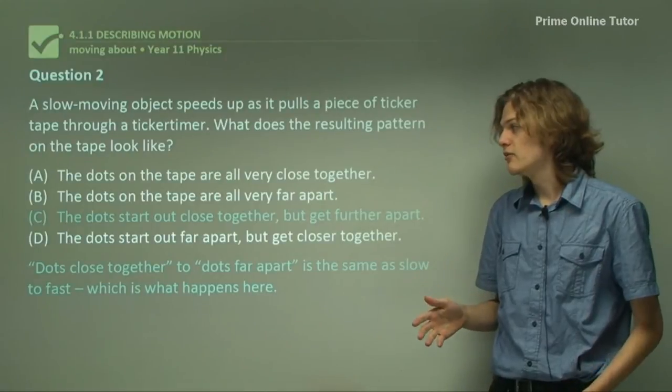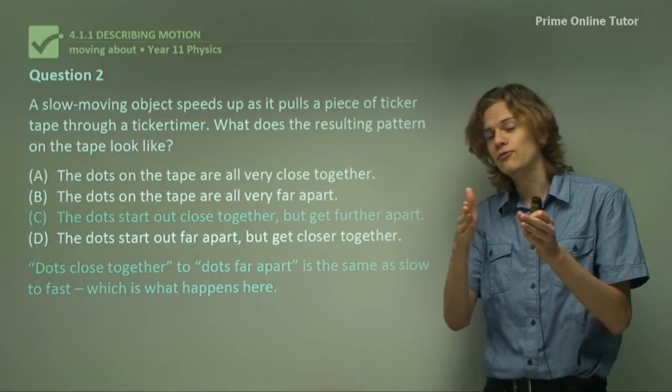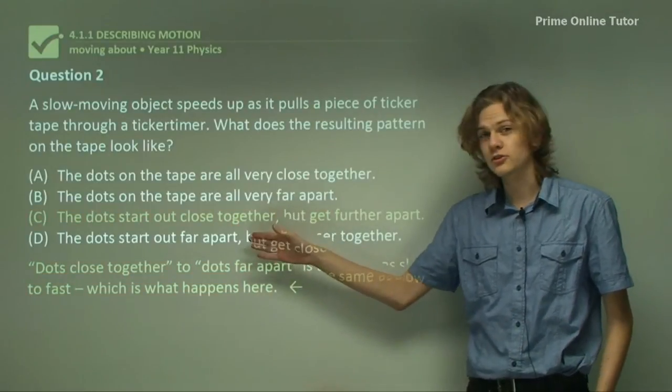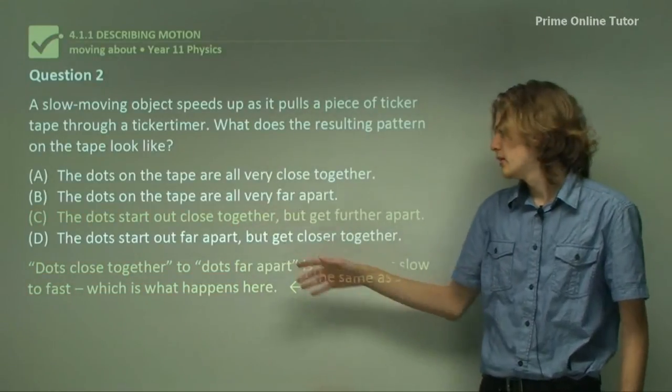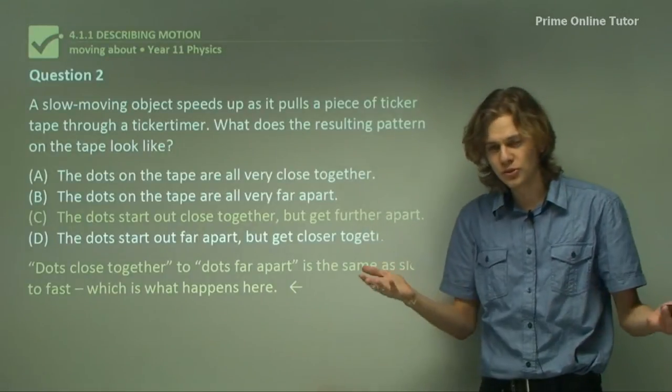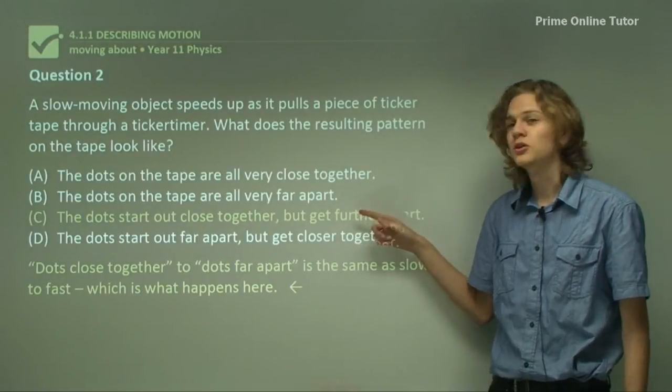Our last option is C. The dots start out close together and get further and further apart. And so starting out close together means that the object starts slow, exactly what we want. And getting further apart means the object is getting faster, also exactly what we want. So C must be the correct answer.